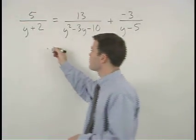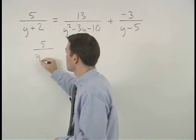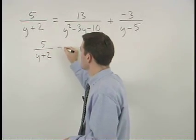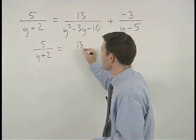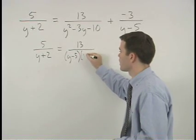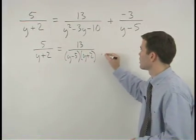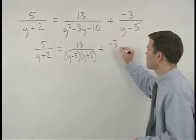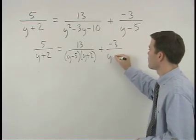So we have five over y plus two equals thirteen over y minus five times y plus two plus negative three over y minus five.